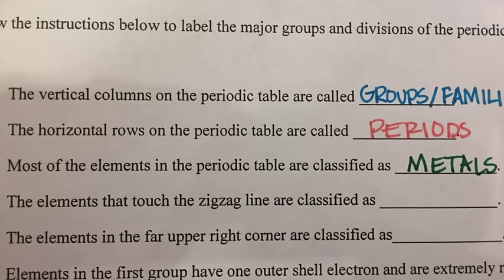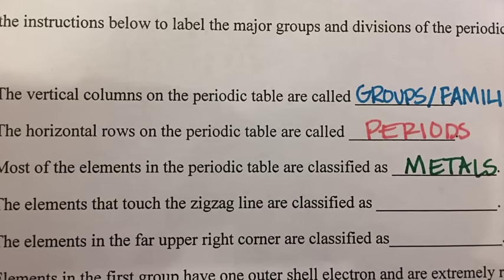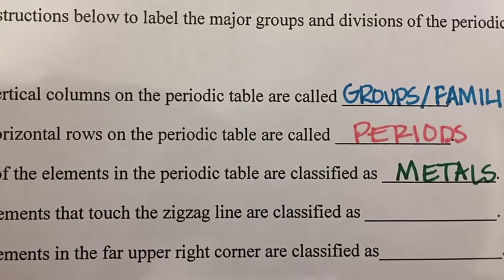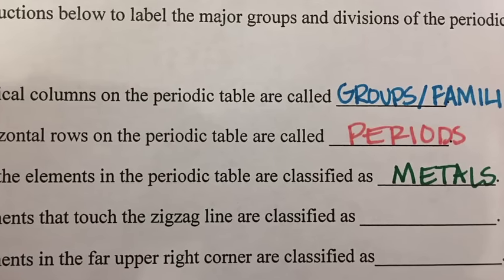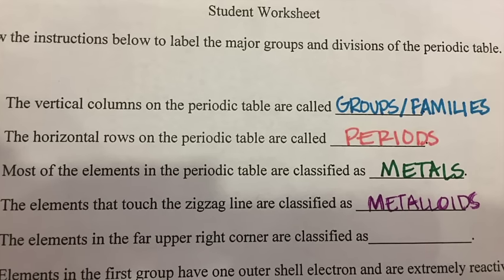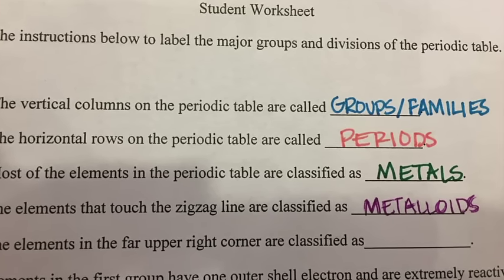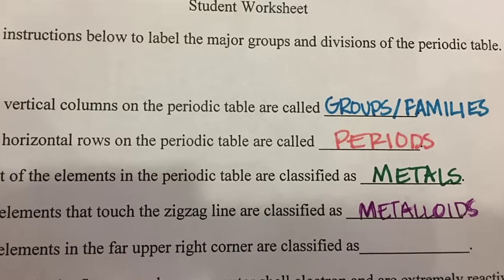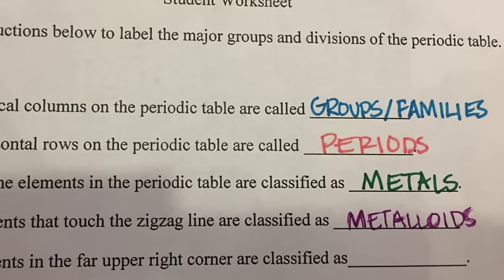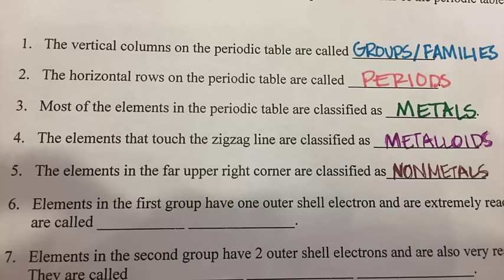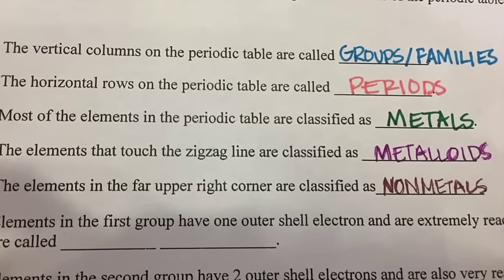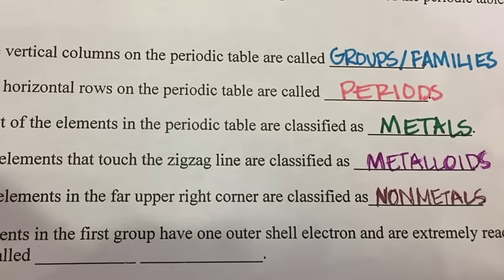There are two main groups in the periodic table: metals and non-metals. The left side of the table contains elements with the greatest metallic properties, and most of the periodic table is classified as metals. There is a zigzag line that goes above aluminum and down on the right side, and the elements that touch that zigzag line are called metalloids, which have properties of both metals and non-metals. As you move from left to right, elements become less metallic, so the right side consists of non-metals.